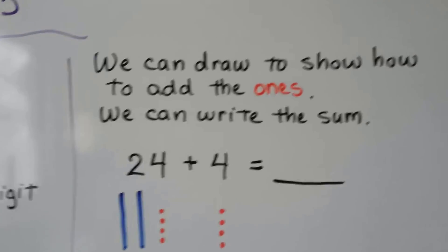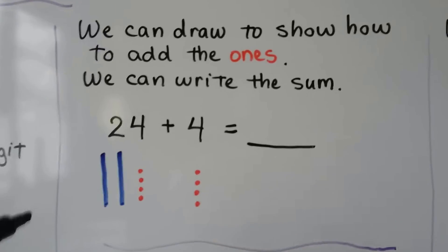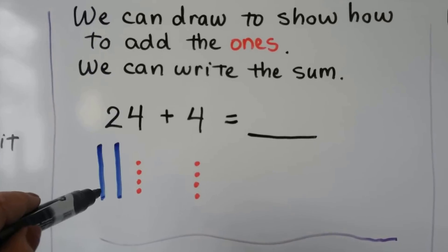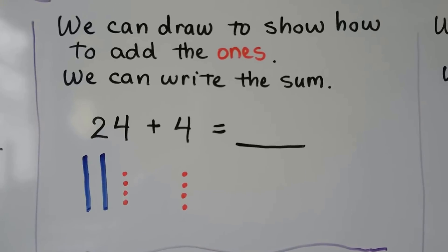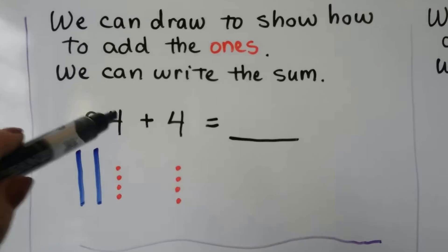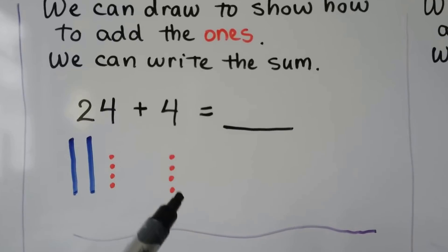We can draw to show how to add the 1s. We can write the sum. We can use a long blue bar for a bar of 10, and we can use little dots for our units of 1. We have 24. That's two 10s and four 1s, plus 4 more 1s.